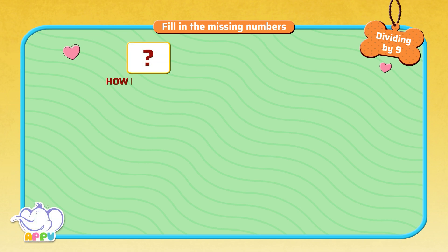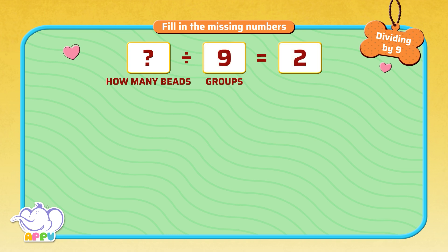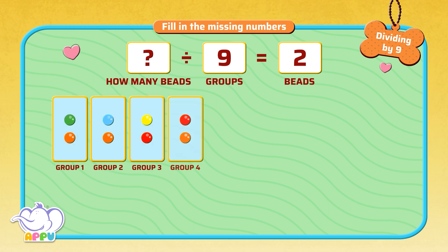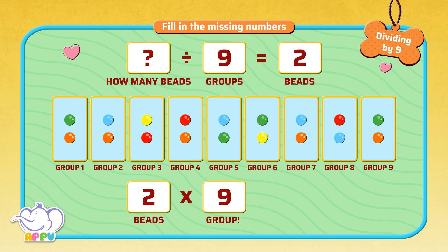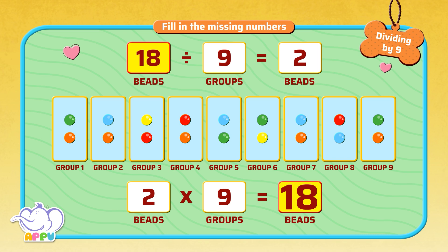We have to find out how many beads, when divided into 9 groups, gives us 2 beads. We know that 2 beads in 9 groups equals 18. How do we do this? We use multiplication that we learnt earlier. 2 times 9 equals 18. So the answer is 18. 18 divided by 9 equals 2. We write it as 18 by 9 equals 2.